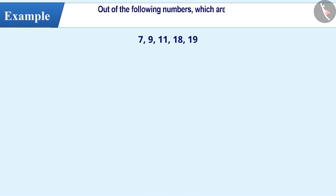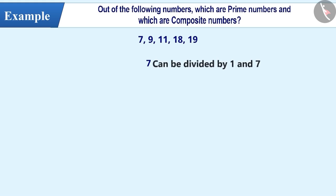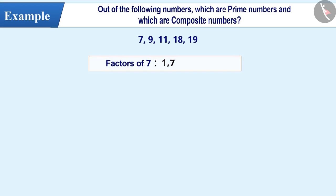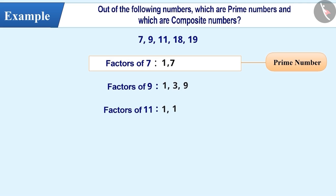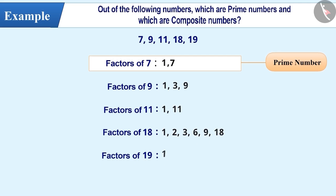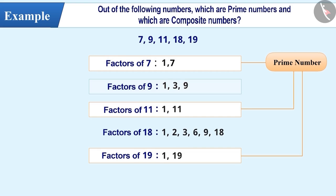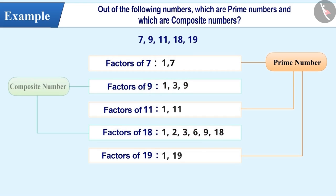Out of the following numbers, which are prime numbers and composite numbers? Number 7 can only be divided by 1 and 7, which means 1 and 7 are the only factors of 7. Since it has only two factors, 7 is a prime number. The factors of 9 are 1, 3, and 9. The factors of 11 are 1 and 11. The factors of 18 are 1, 2, 3, 6, 9, and 18. The factors of 19 are 1 and 19. Since 11 and 19 have only two factors, they are prime numbers like 7. Because of having more than two factors, 9 and 18 are composite numbers.